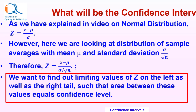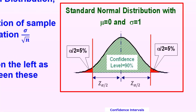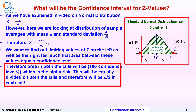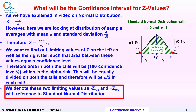We want to find out limiting values of z on the left as well as on the right tail such that the area between these values equals the confidence level. This is the standard normal distribution with mean mu equal to 0 and sigma equal to 1. In the tails, the area is 5% as we are talking about a confidence level of 90%. Therefore, area in both the tails will be 100 minus confidence level percent, which is the alpha risk. This will be equally divided on both tails and therefore will be alpha by 2 in each tail. We denote these two limiting values as minus z alpha by 2 and plus z alpha by 2 with reference to standard normal distribution.